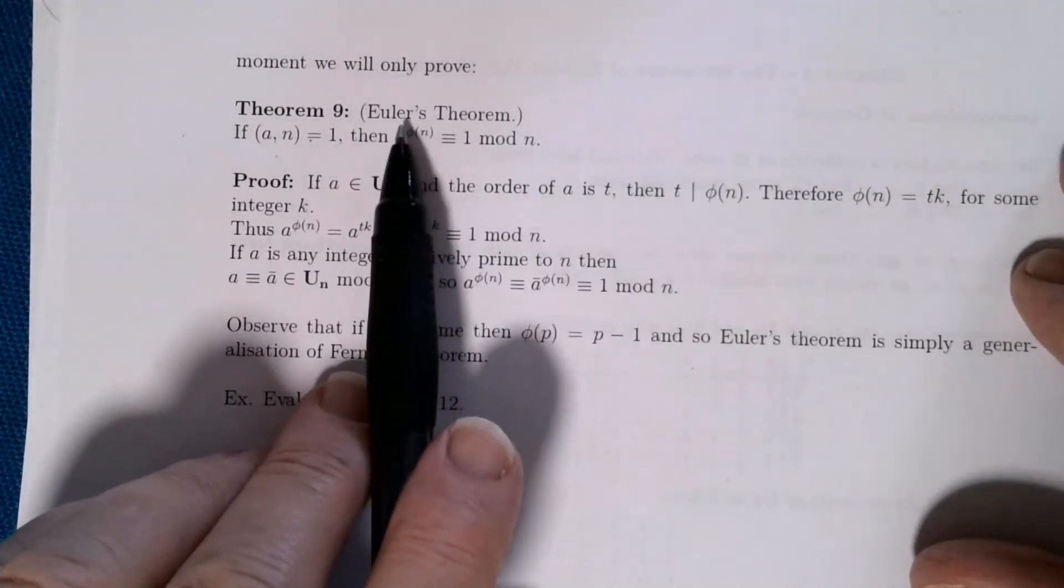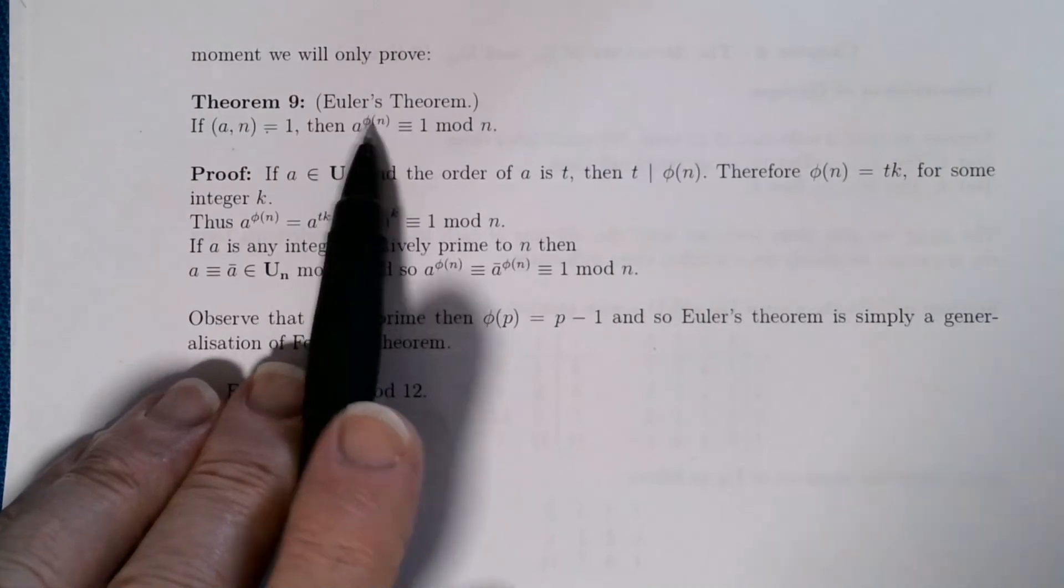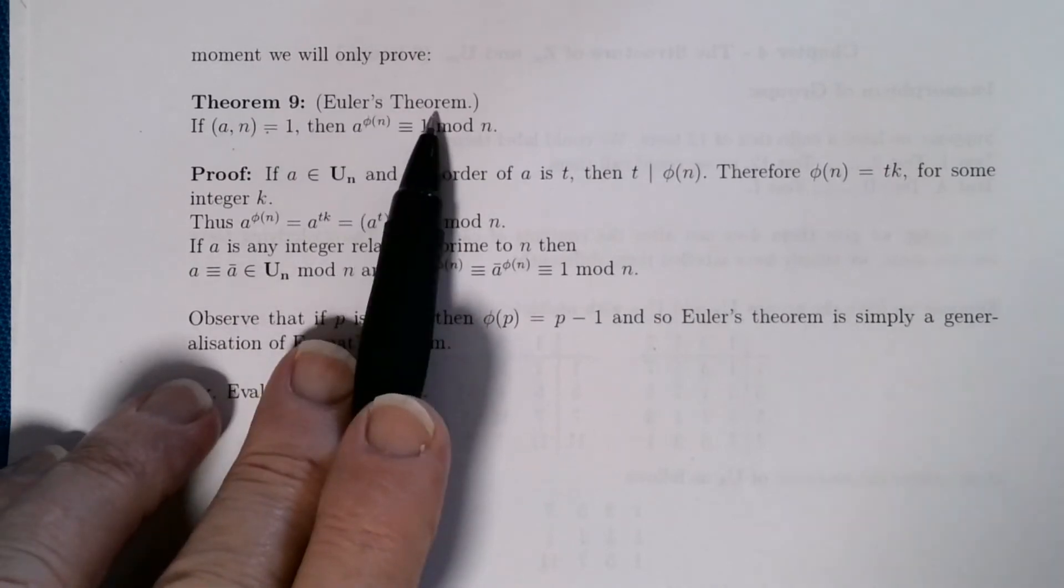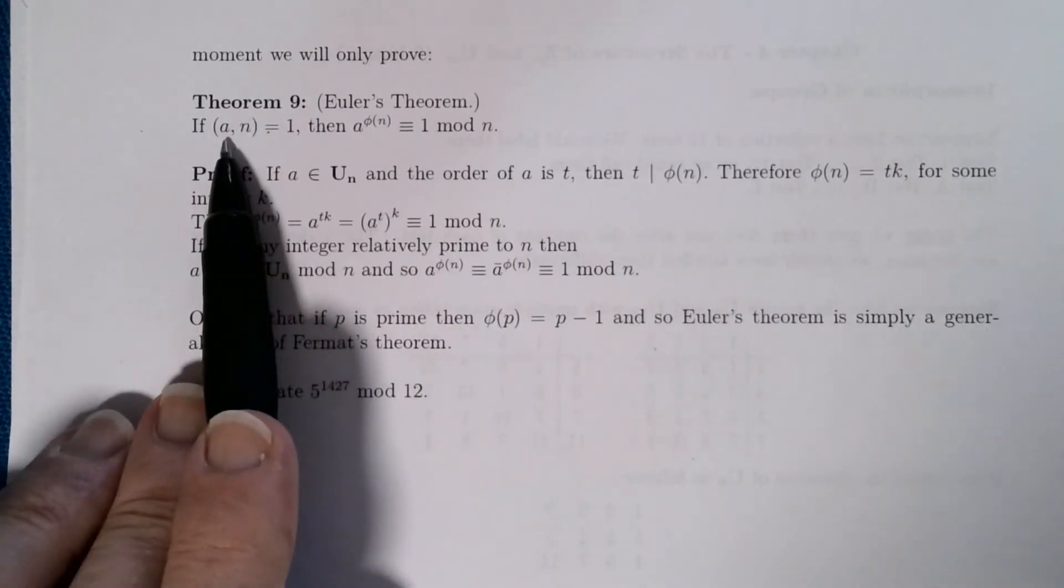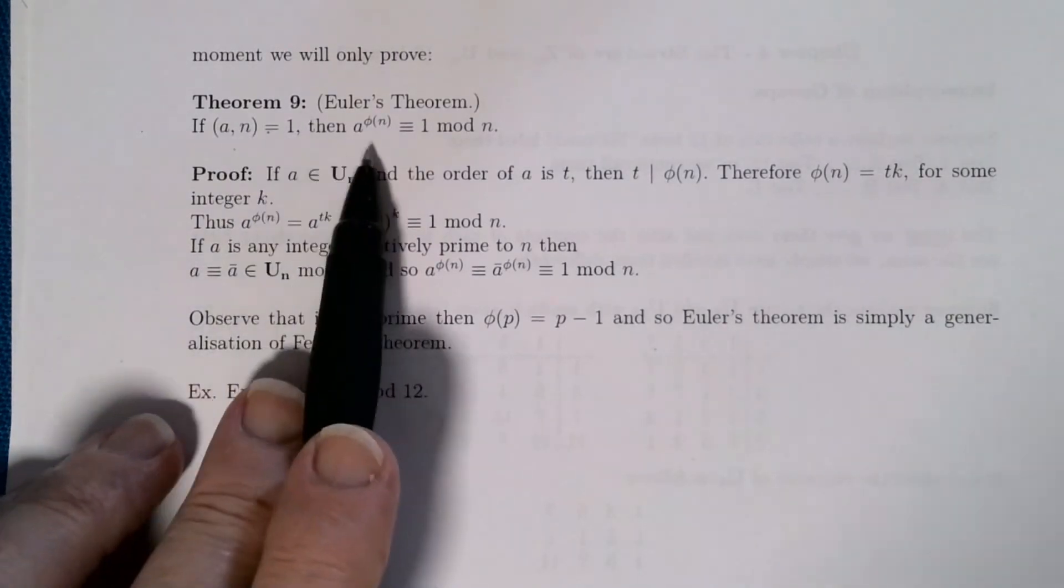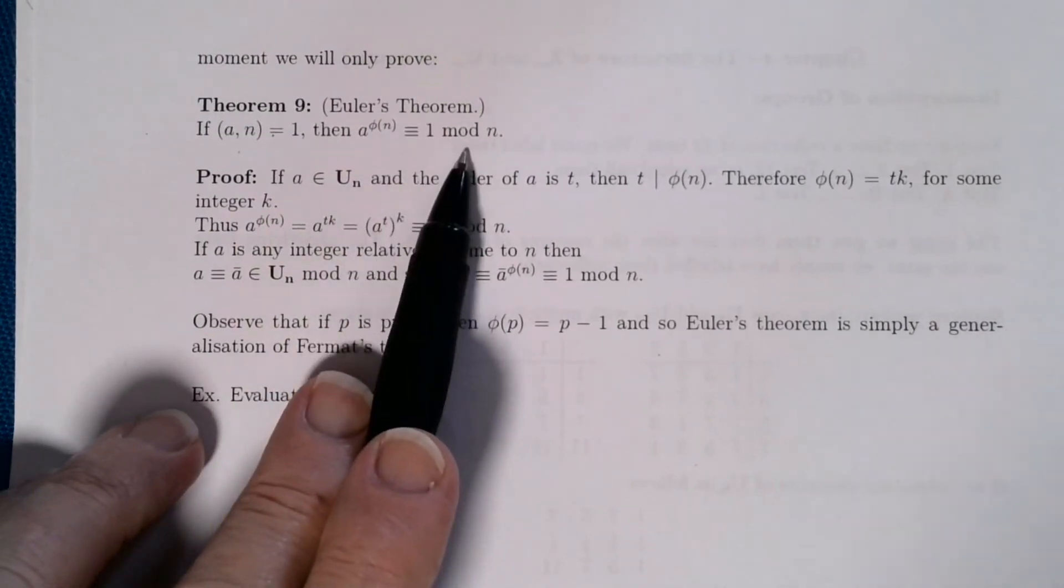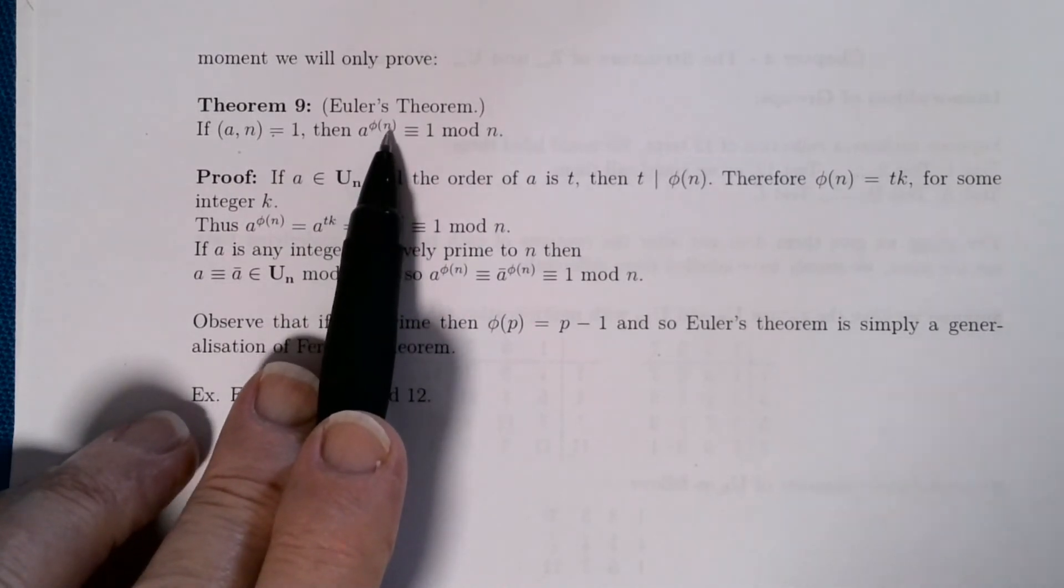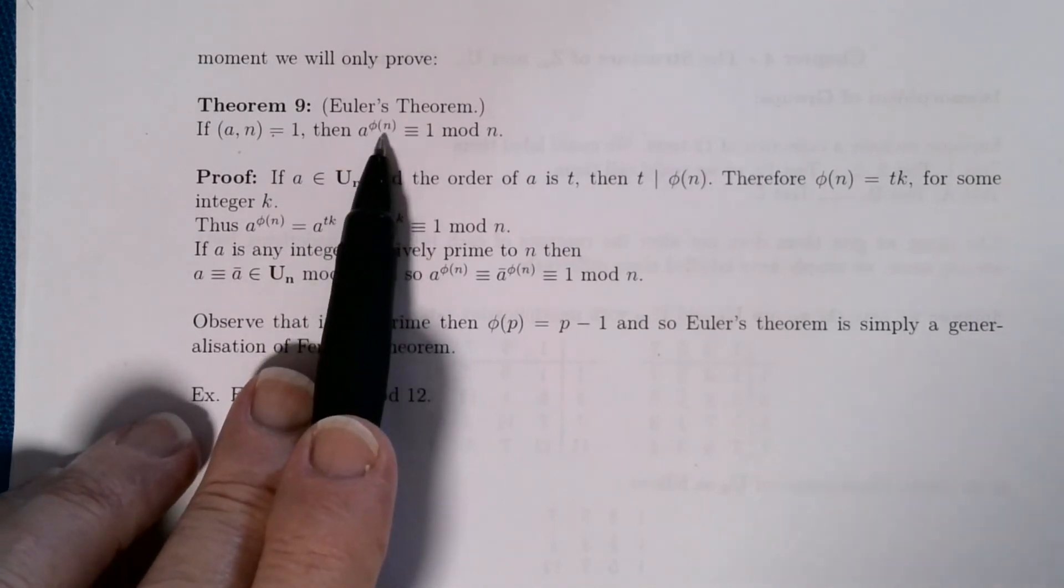So Euler's theorem is a generalization of Fermat's theorem. Fermat's theorem said a^(p-1) is 1 mod p, if p is prime. Euler found the correct generalization of this, which was very clever. And it says if you've got two numbers, a and n are relatively prime, so n is your modulus, then a^φ(n) is congruent to 1 mod n. Notice that in the case where n is a prime, then φ(p) is p-1. So this just collapses back to Fermat's little theorem.